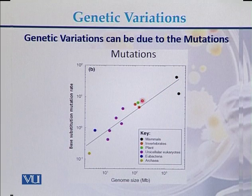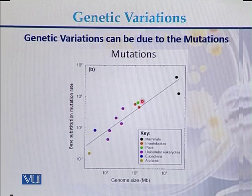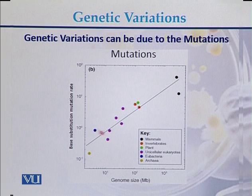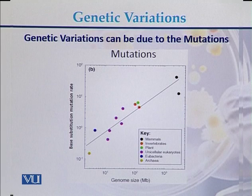Going down the scale, lower mutation rates are found in invertebrates and plants, then unicellular eukaryotes, then eubacteria and archaea. So mutation is the reason responsible for the genetic variations found in different individuals of a species.